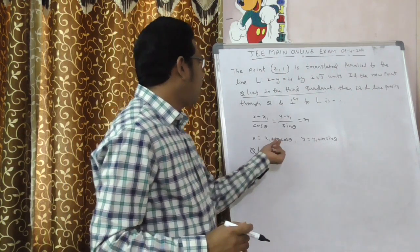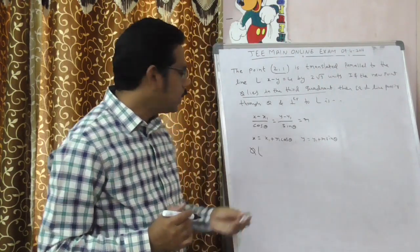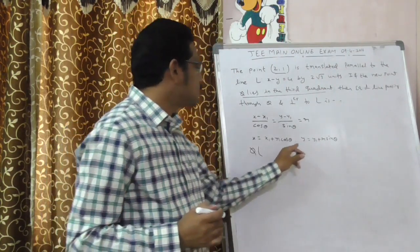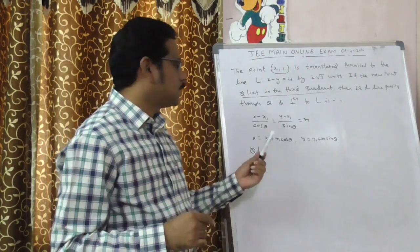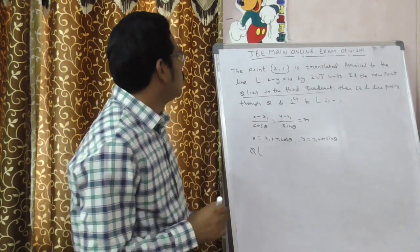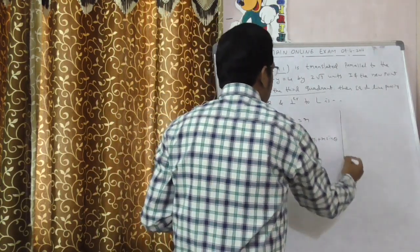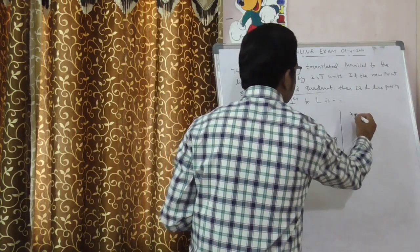Here, x1, y1 given is the given point 2 comma 1. And r is also given - what is r? 2 root 3 units. Here, you have to calculate cos theta and sin theta values. How to calculate cos and sin? Just observe here, by using given line.